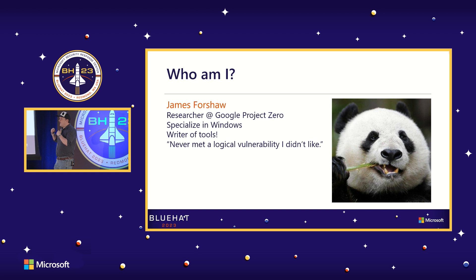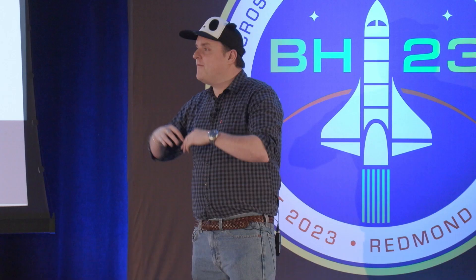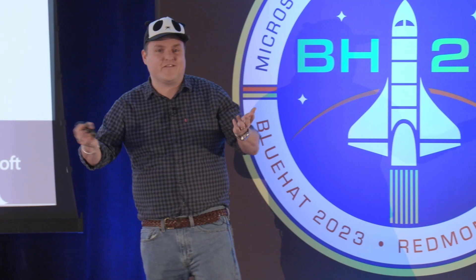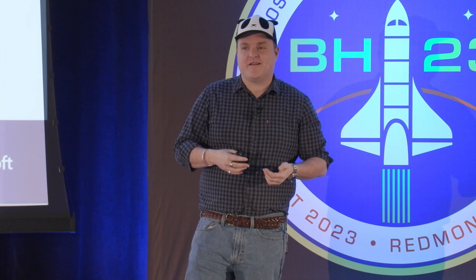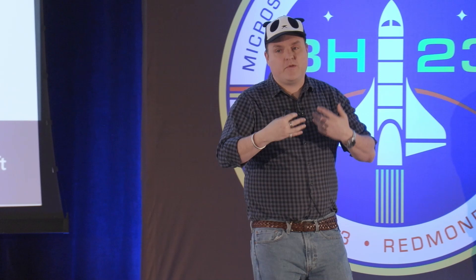I'm not someone who tends to find memory safety bugs — things like memory corruption or use-after-frees. If I do find a bug like that, it's usually by complete accident. I've been looking at some other area of the codebase and just happened upon a crash. I very much look for logical vulnerabilities, exploiting the built-in design and implementation of a product.